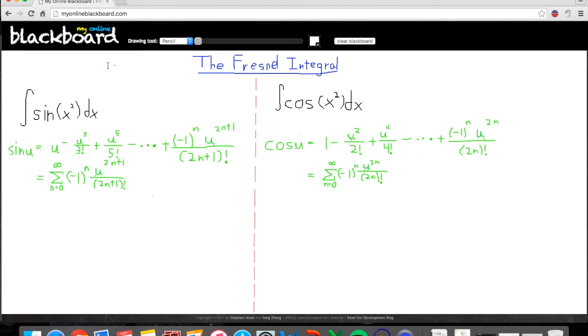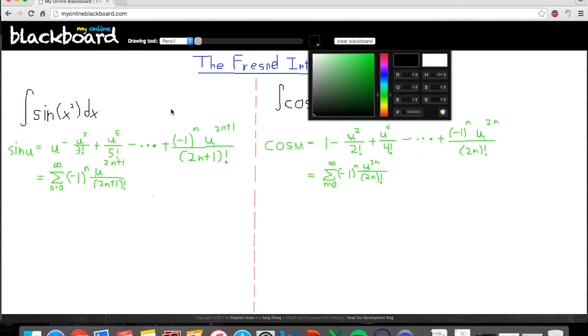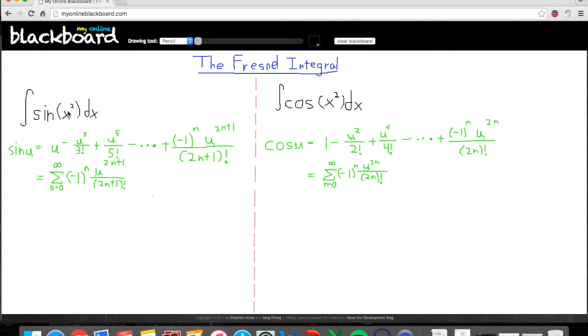So the Fresnel integrals are two integrals that can't be solved in terms of elementary functions. To quickly explain why, if you try u-substitution, you'll end up with the next term later. When you go through the full u-substitution, if you substitute u as well, you'll end up with the integral of sine u over radical u, which also can't be solved.